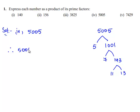Therefore, 5005 can be expressed as 5 times 7 times 11 times 13. Hence, 5005 is written as a product of its prime factors.